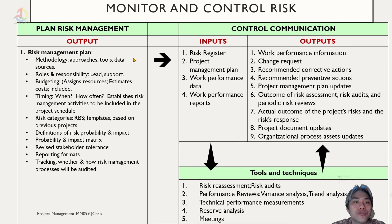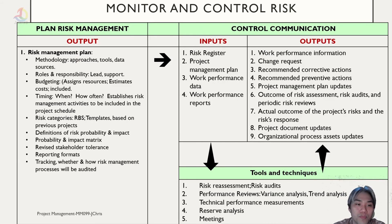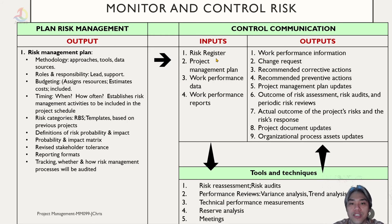Monitor and Control Risk takes its inputs from the output of plan risk management, which tells us the methodology, the approach to register the risk, who is responsible, the budget, timing, risk categories, definitions, and so on. These become the inputs along with risk registers, the project management plan, work performance data, and work performance reports.